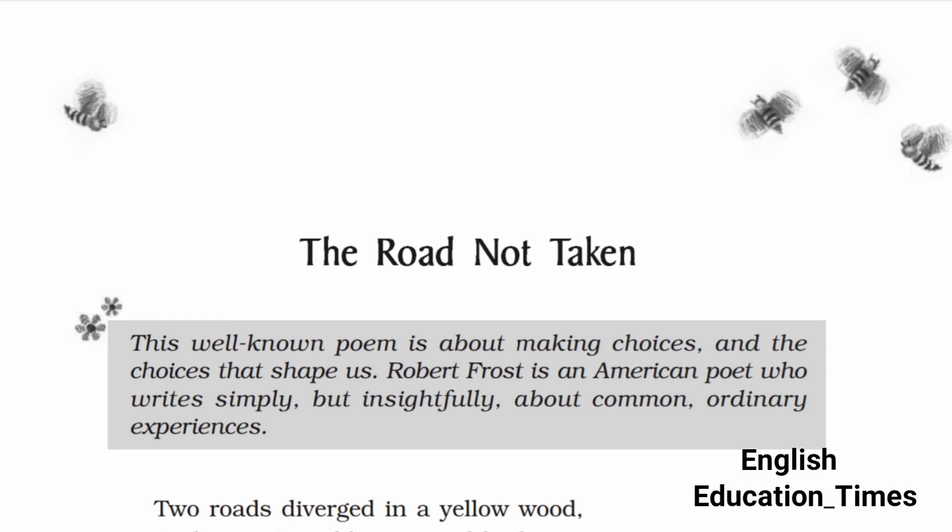Narrator उस रास्ते को choose करते हैं जो कि grassy and wanted wear है, जो ज़्यादा used नहीं है, काफी grassy है और बहुत कम लोगों ने उसे use किया है। यह show करता है कि poet उस stream में नहीं जाना चाहते जो mainstream है — वो कुछ different करना चाहते हैं। इसी वजह से उन्होंने उस path को choose नहीं किया जो बहुत सारे लोगों ने choose किया है।